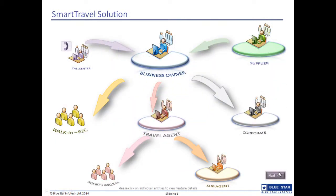This screen talks about the Smart Travel Solution architecture. Here the business owner is the central point who can communicate to all the relevant parties such as suppliers, corporates, travel agents in case of B2B, direct customers in case of B2C, as well as call centers.